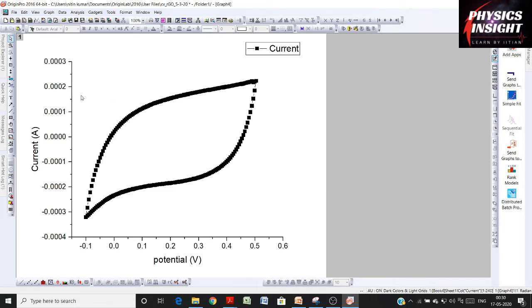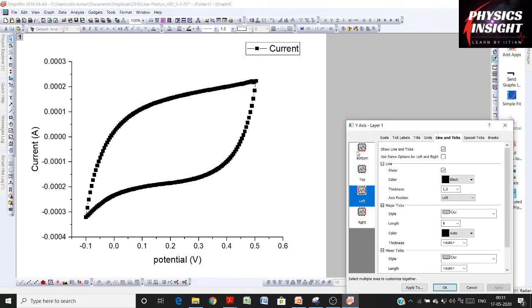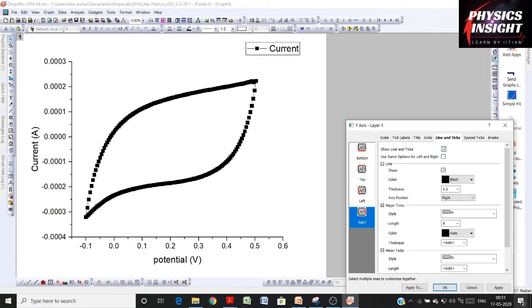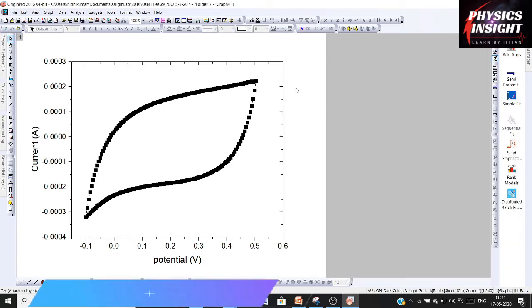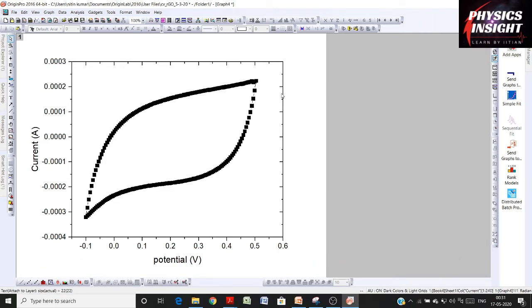Just doing some modifications to make it look better. This data is for a scan rate value equal to 1 millivolt per second.